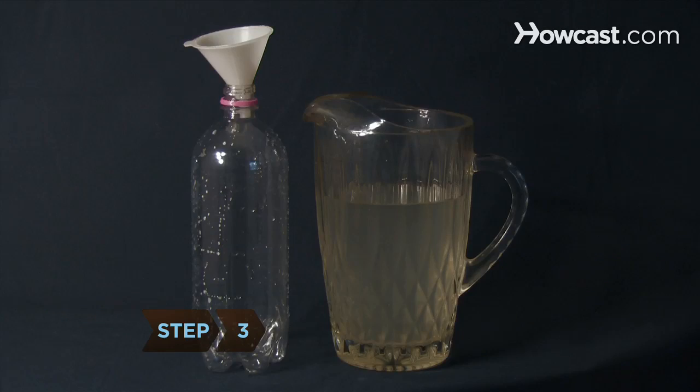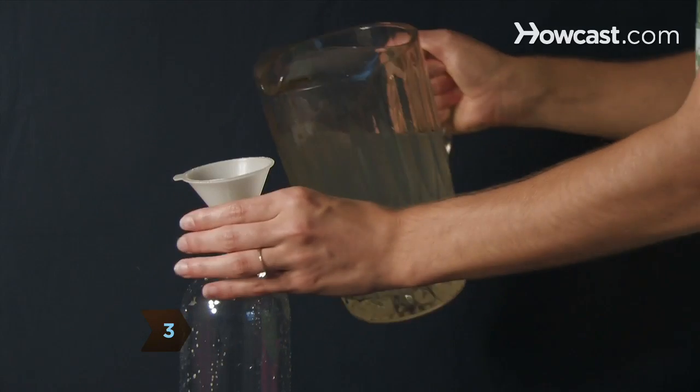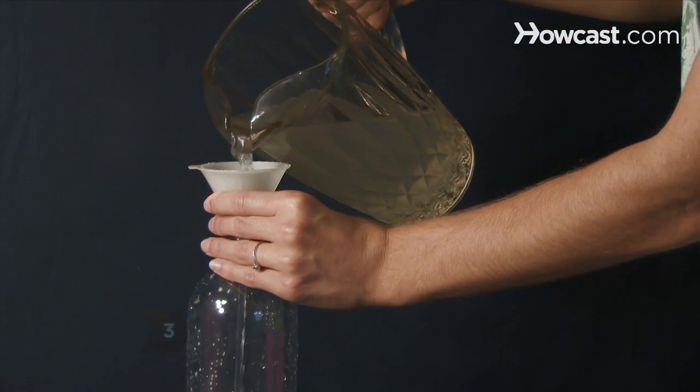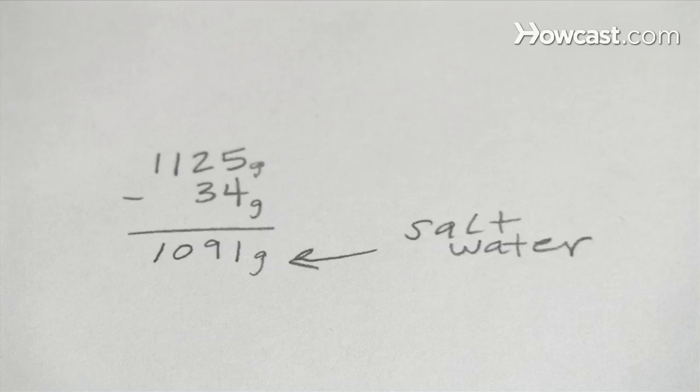Step 3. Replace the tap water in the bottle with room-temperature saltwater and weigh it, then subtract the weight of the empty bottle and record the weight of the saltwater.